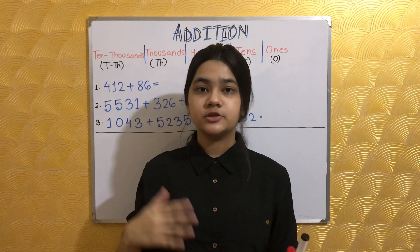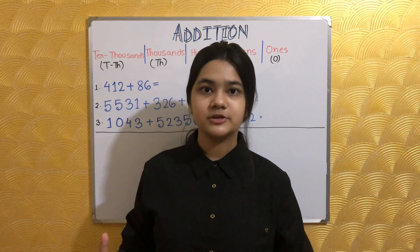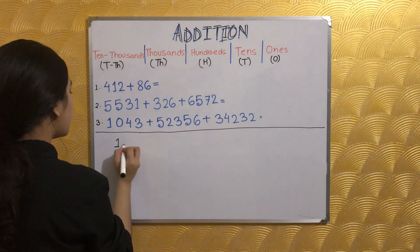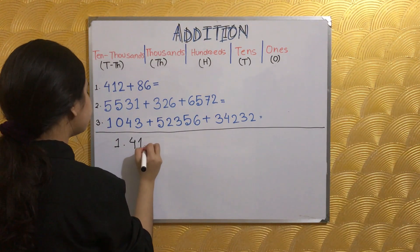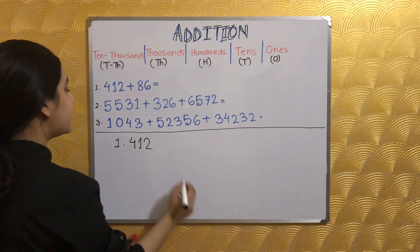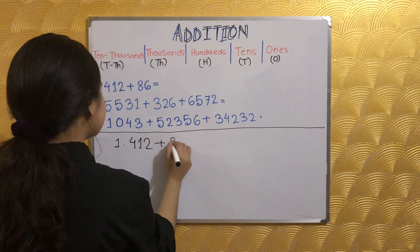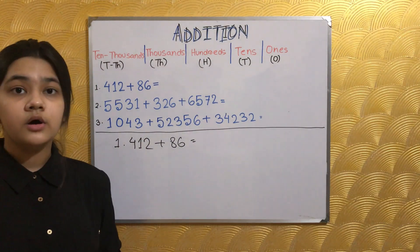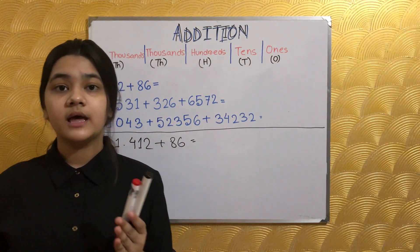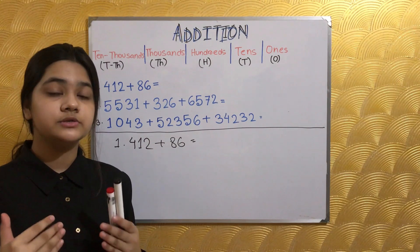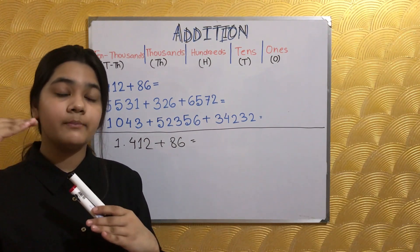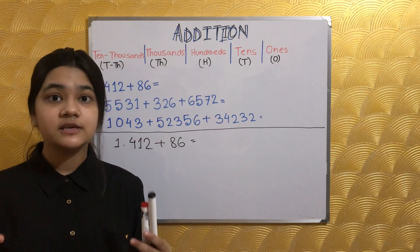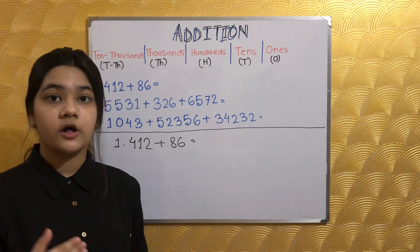We'll start by solving a three-digit number and a two-digit number together. Over here we have 412 for our three-digit number and 86 for our two-digit number. To solve this addition, I'm going to stack them up according to their place value so that it is easier to actually solve the addition.